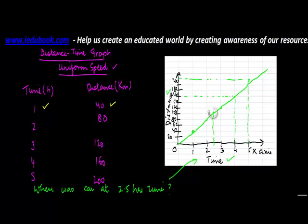This might hit this particular line at a particular point. And then connect that point to the y-axis. So when you connect it, the value that you get, which is 100 in this case, is the distance which the car had covered after 2.5 hours.